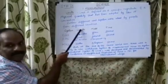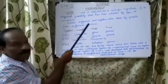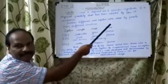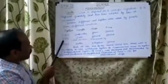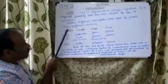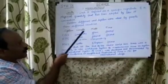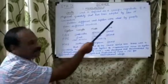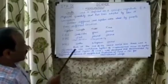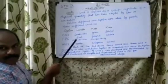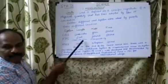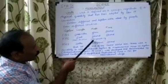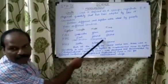In the CGS system, length is measured in centimeter, mass is measured in gram, and time is measured in second. In the FPS system, length is measured in foot, mass is measured in pound, and time is measured in second. Here, 1 foot equals 30.48 centimeter, and 2.205 pounds equals 1 kilogram.